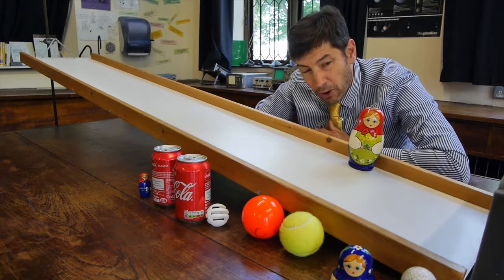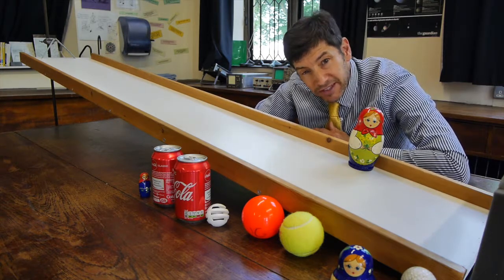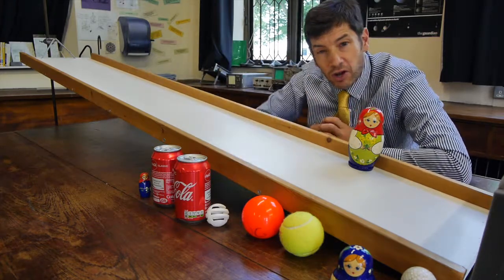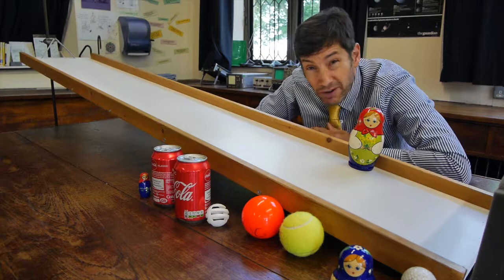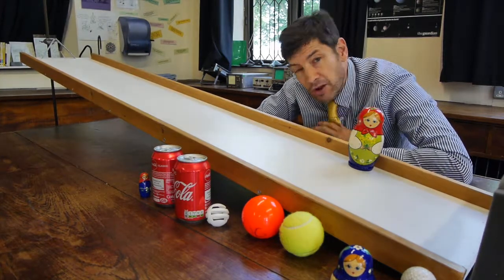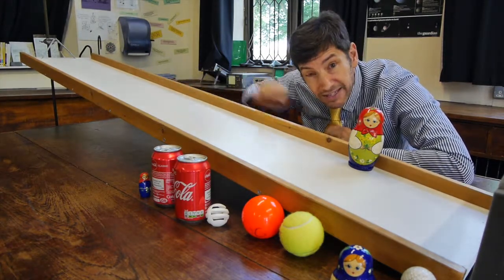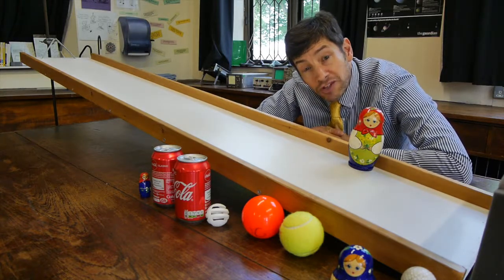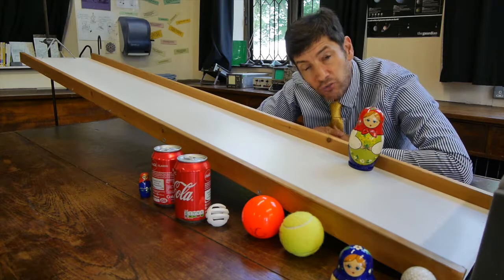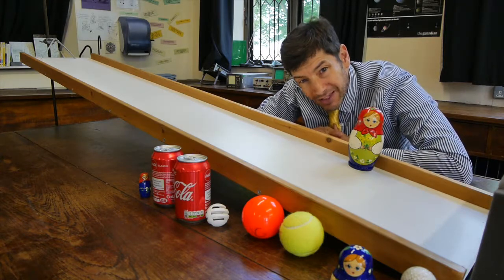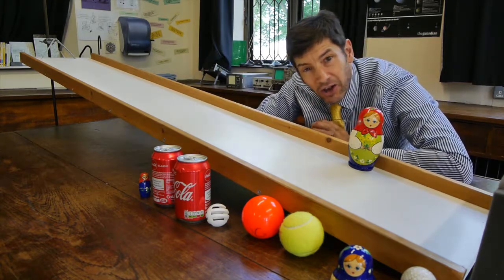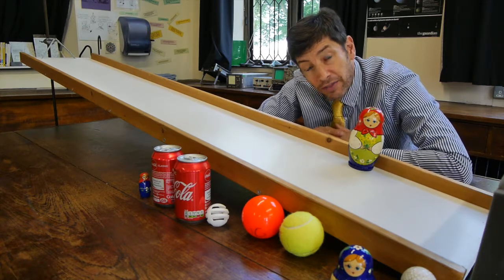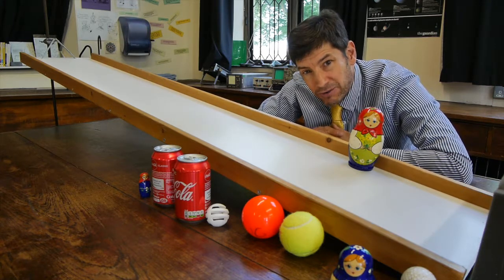But why it's different from dropping them is the kinetic energy appears in two forms. It's coming down the slope, which is translational or I suppose linear kinetic energy. But don't forget what's also happening is it's rotating. So some of that gravitational potential energy goes into causing the object to rotate as well as to move it in a straight line down the ramp. And this is the key to why the heavier one makes it to the bottom first.